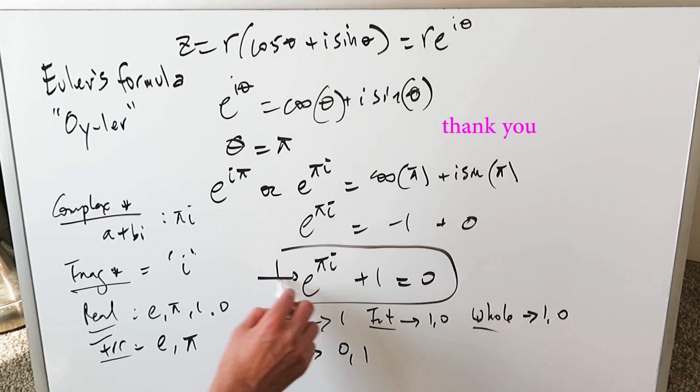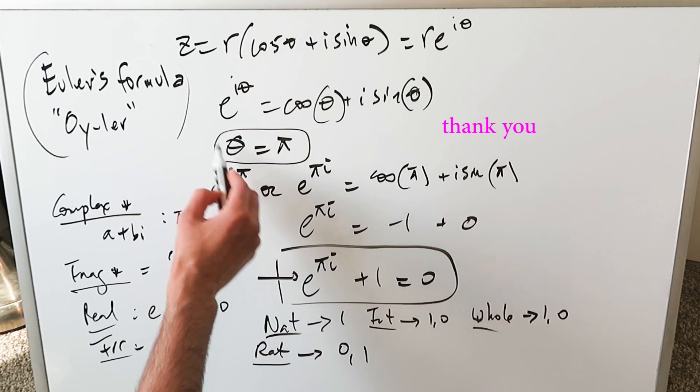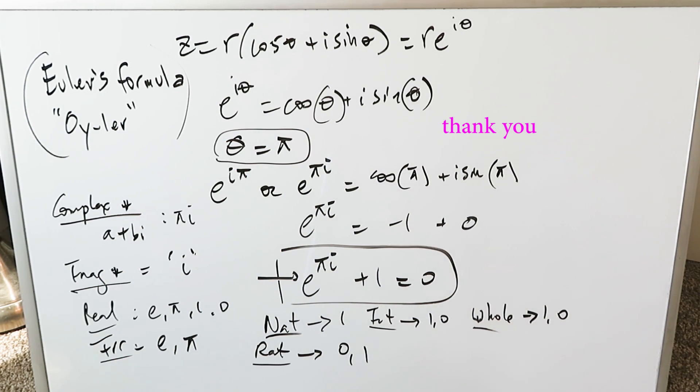Remember this equation, you will see it. It's all coming from Euler's formula and the application of this pi into the theta of that formula. Thank you for watching.